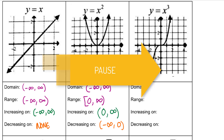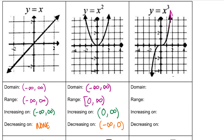Pause and try finding domain, range, and increasing and decreasing intervals for y = x³, then press play to check. Even though the arrows may look like it's becoming more vertical, it does continue out. The domain is negative infinity to infinity, and the range is also negative infinity to infinity. As we go from left to right, the y values continue to increase, so this is a continuously increasing function from negative infinity to infinity with no intervals of decreasing.